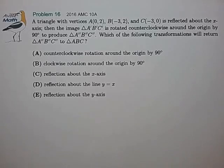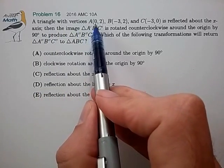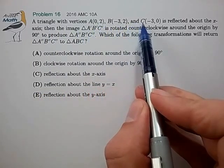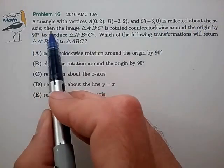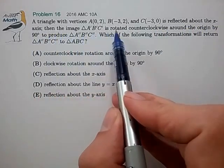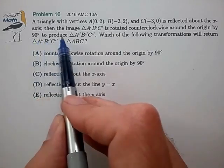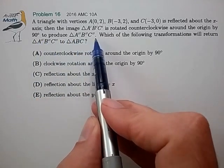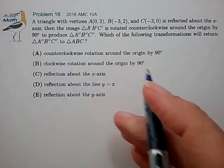Hi, this is problem 16 from the AMC 10A. A triangle with vertices A(0,2), B(-3,2), and C(-3,0) is reflected about the y-axis. Then the image is rotated counterclockwise around the origin by 90 degrees to produce this final triangle. Which of the following transformations will return the final triangle to the initial triangle?